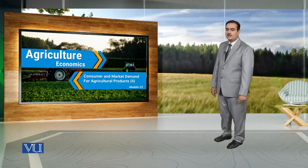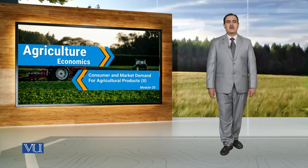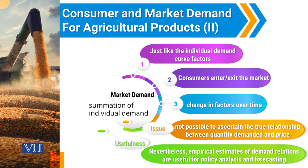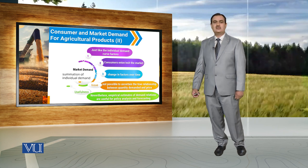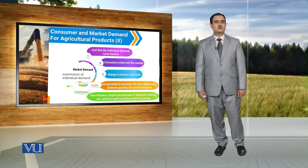It is the consumers that create demand for agricultural products, and then demand for agricultural products by all the individuals in the market creates market demand for agricultural products. Market demand is the sum of individual demand. Just like the individual demand curve, all those factors that shift the individual demand curve also shift the market demand curve. Market demand also changes when there is entry and exit of consumers in a particular market.